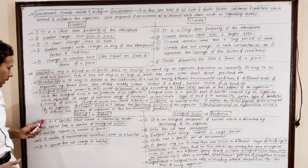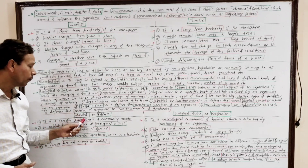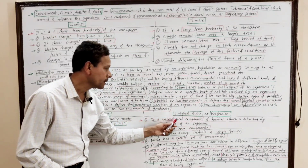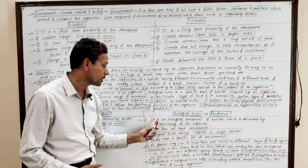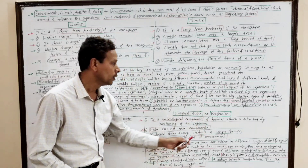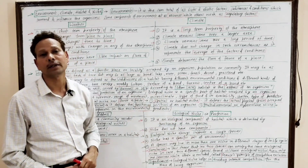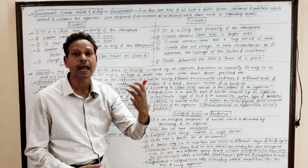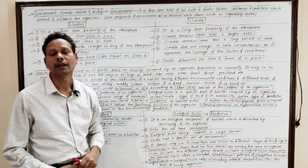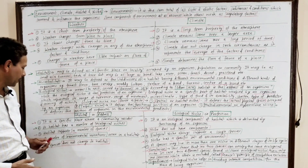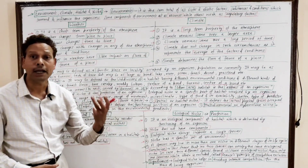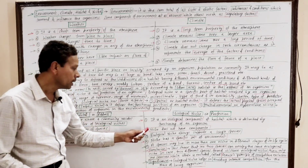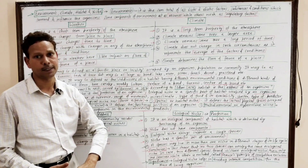Differences between habitat and ecological niche: Habitat is a specific place or area where a community, organism, or population resides. Ecological niche is a component of the habitat which is delimited by the functioning of the organism — the physical and functional activities played by an organism. A habitat may possess a number of ecological niches.